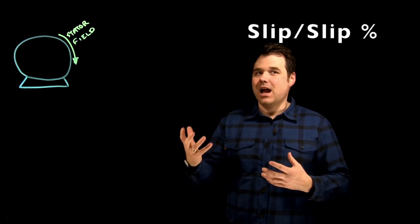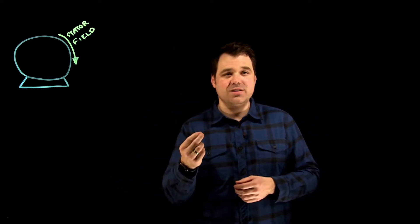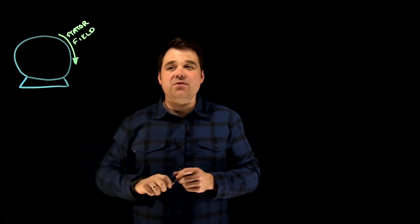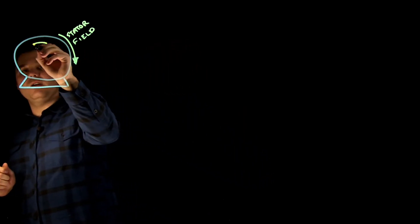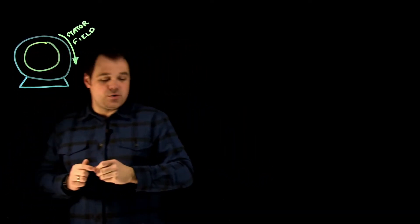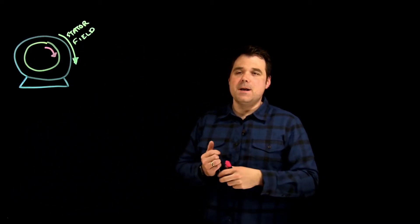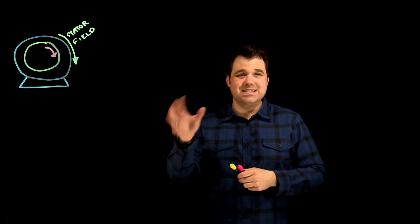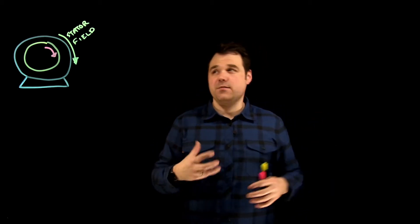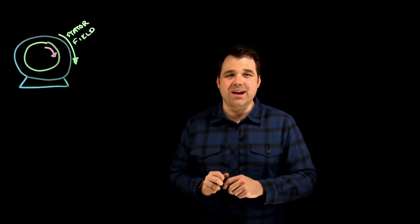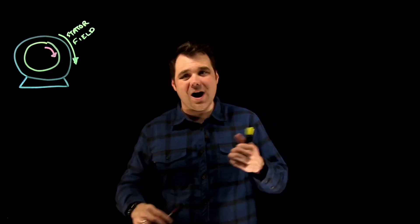Slip is basically how much relative motion there is between the stator magnetic field — we know we have a stator with a rotating magnetic field — and inside that we have a rotor, which we know is also rotating in the same direction as the stator. So slip is the ratio of the difference between the stator and the rotor.